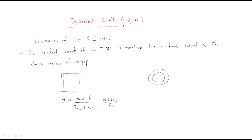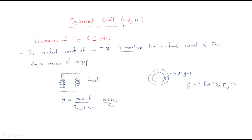The no-load current of the induction motor is more than the no-load current of the transformer, due to the presence of an air gap. Here, this is the stator, this is the rotor, and here we have the air gap. Through the air gap, flux is transferred from stator to rotor, which requires more no-load current. The magnetizing current is produced from the no-load current, so it requires more no-load current. In the case of a transformer, there is no air gap, so it requires less magnetizing current and less no-load current.